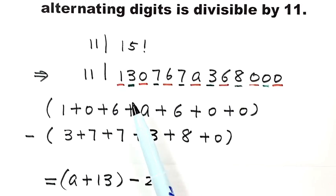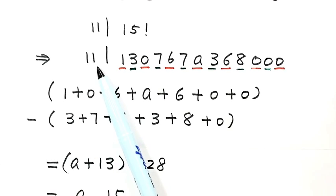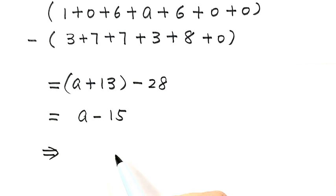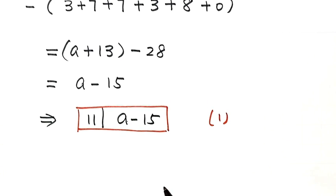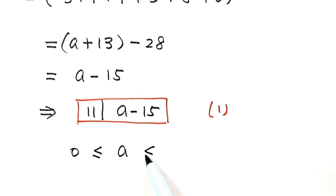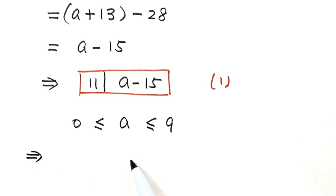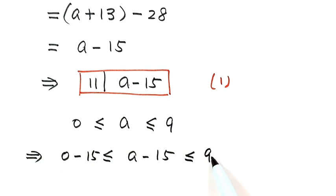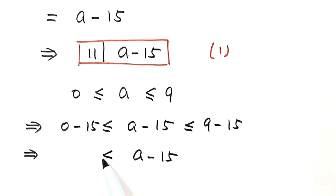Based on the rule, because this number is divisible by 11, the difference between the two sums must be divisible by 11. So a minus 15 is divisible by 11. Since a is an integer between 0 and 9, a minus 15 is between negative 15 and negative 6.